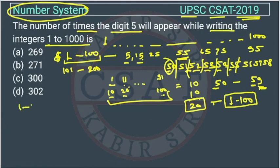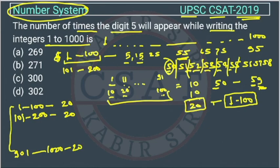So from 1 to 100 we are getting 20 times. So similarly from 101 to 200 we will get 20 times. So in this way, 901 to 1000 it will be 20 times. So total how many sets are there? So total 10 sets are there.